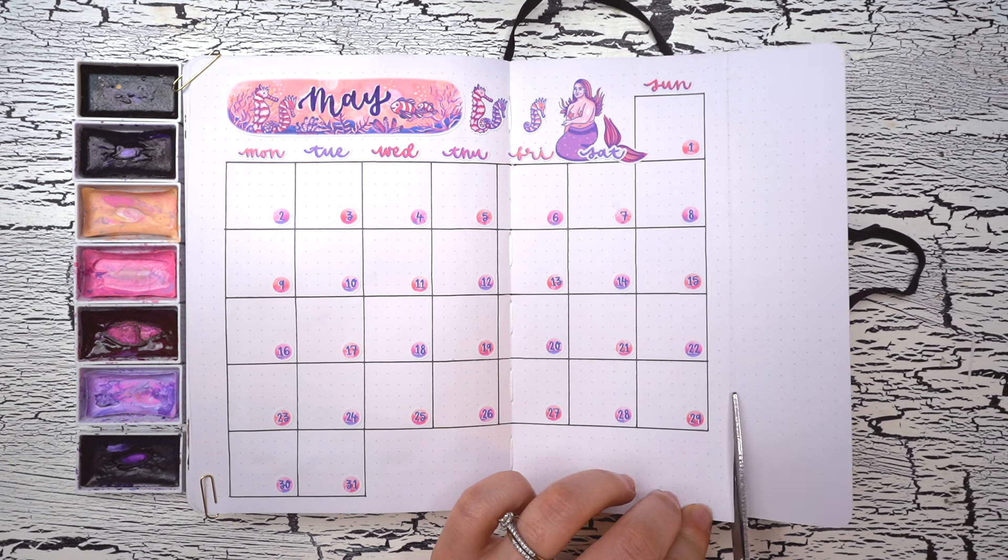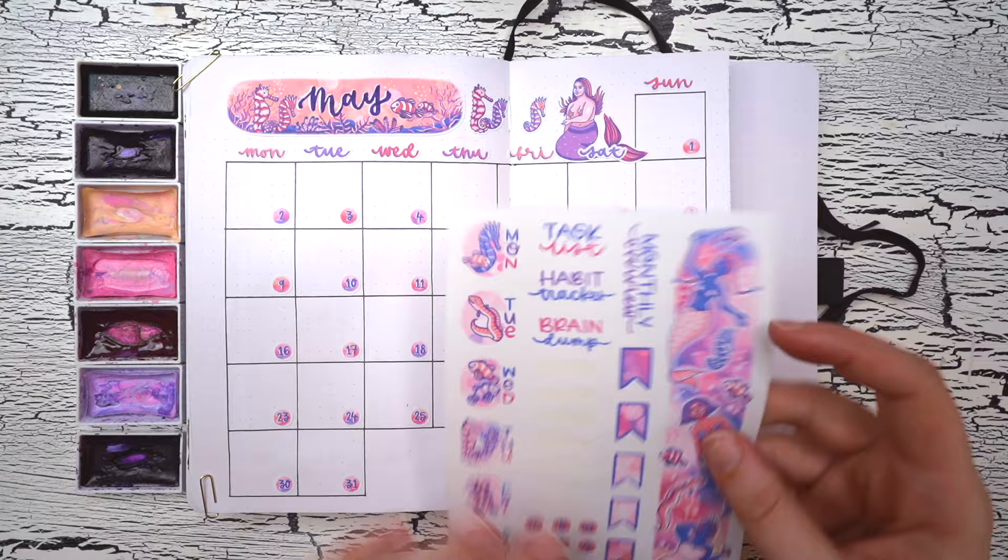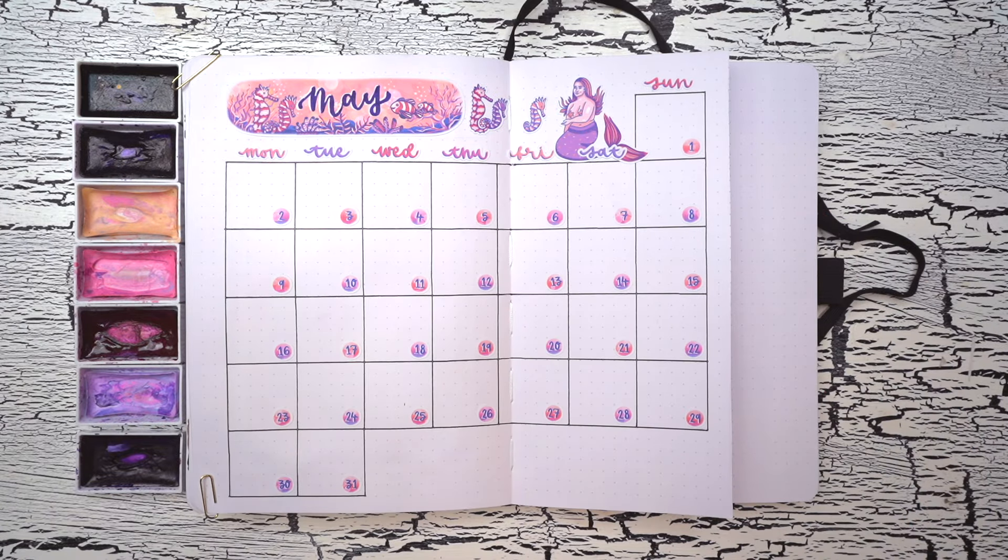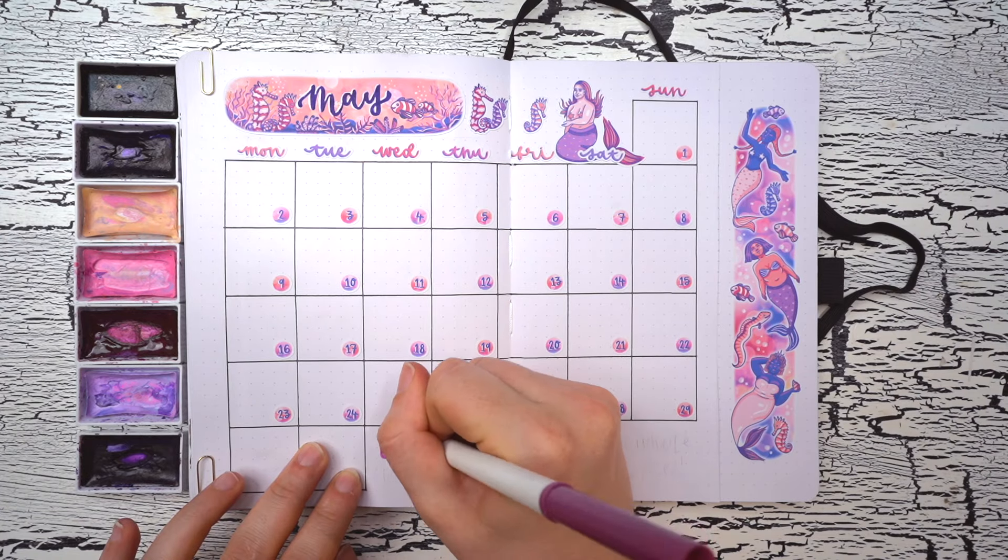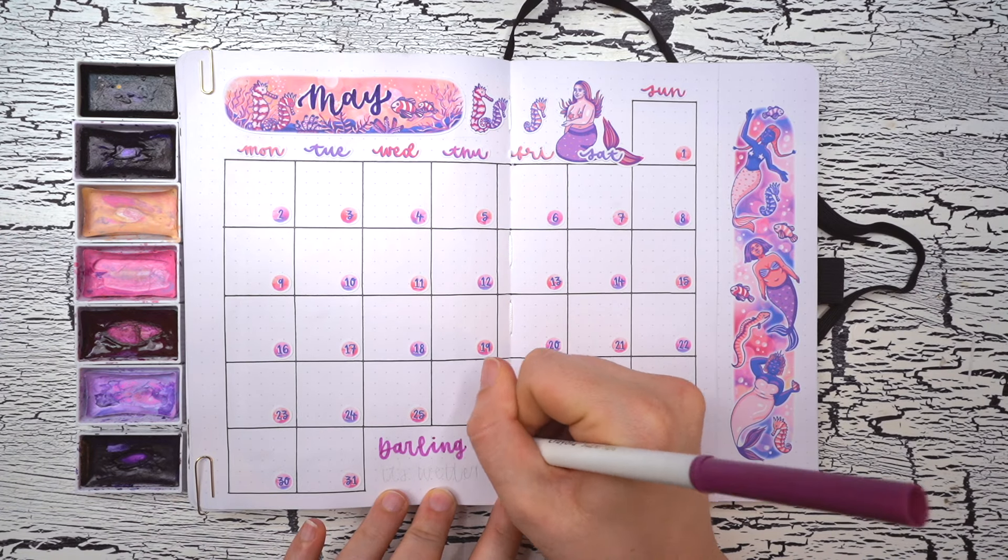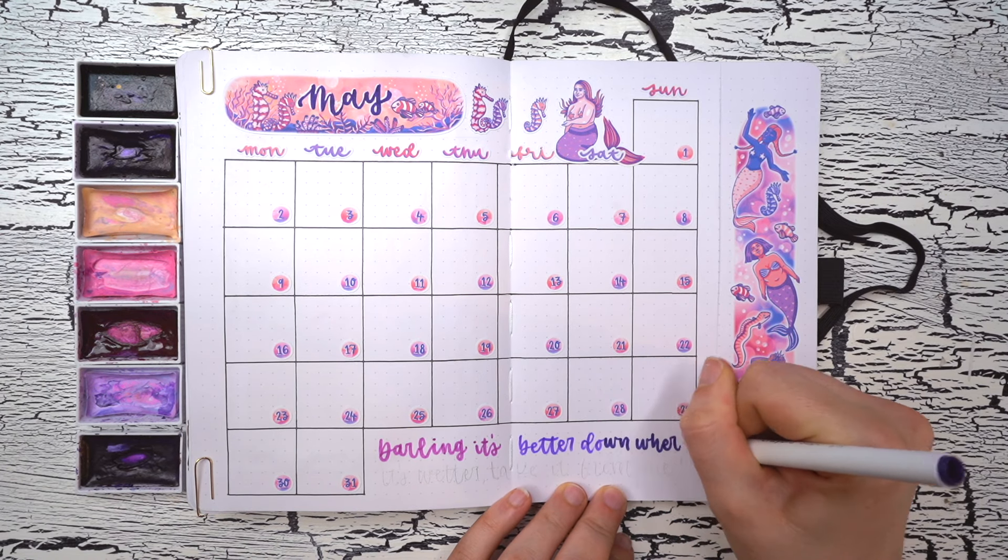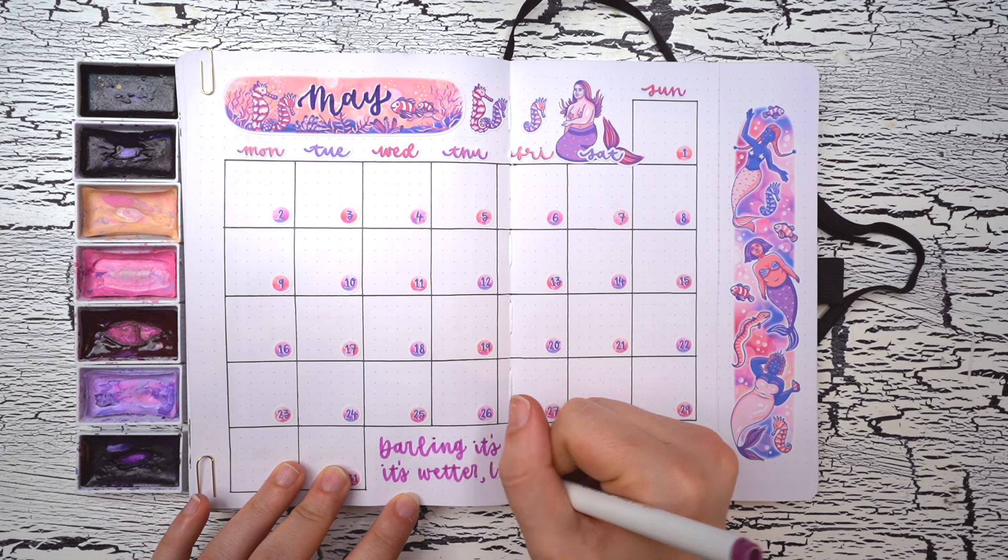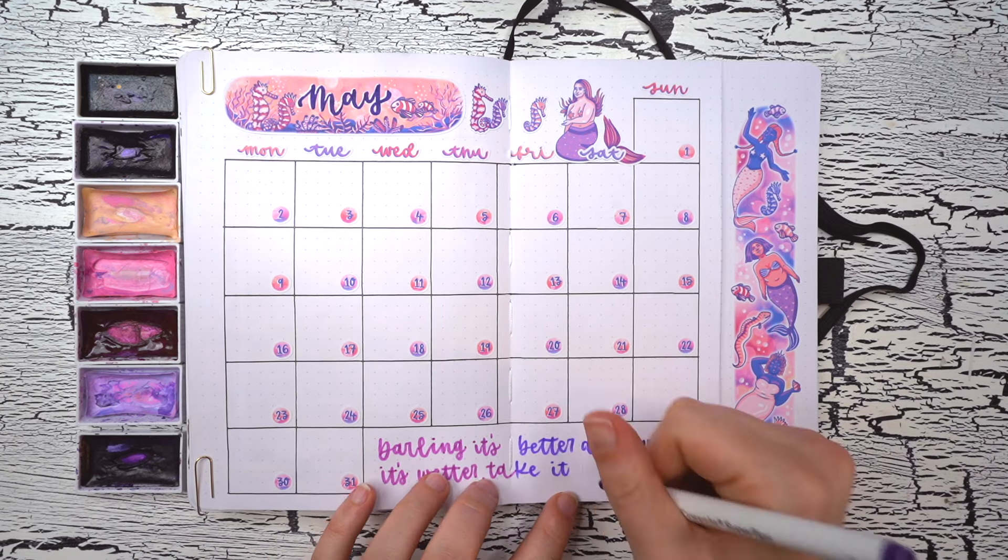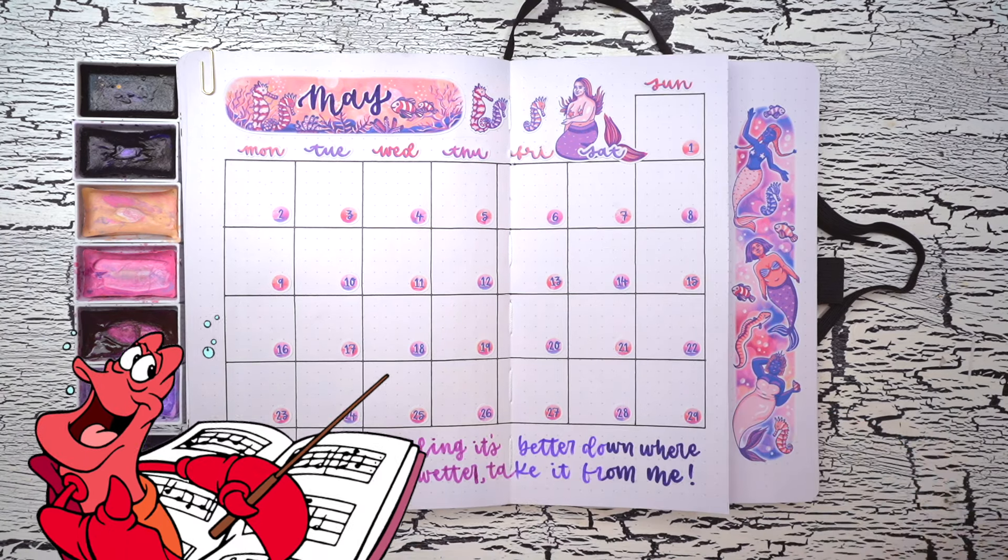I ended up not really liking how that black header was looking. So I switched it out here for a hand-lettered May header just using a dark blue Crayola super tip. Now that my calendar is done, I'm going to take my scissors out and create a Dutch door here by cutting off all of the blank space on the right side of this spread. I'm going to use this column that's sticking out just as a decorative sidebar, sticking in a big vertical sticker from the monthly kit.